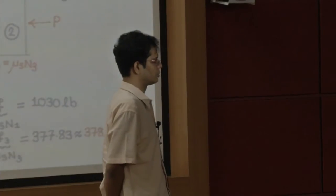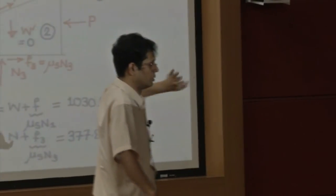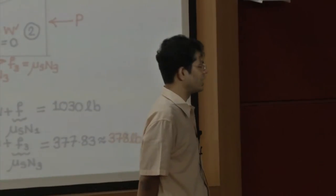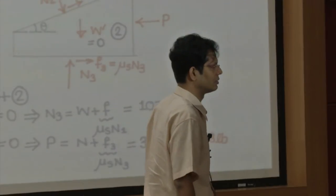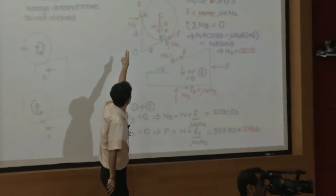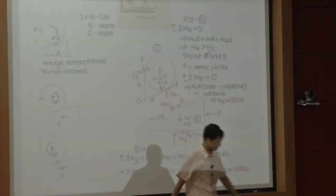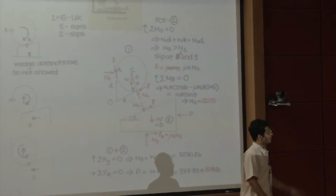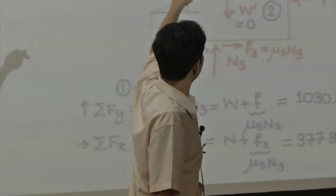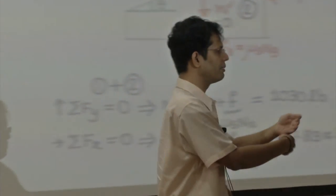A student suggests: instead of taking moment, if you take free body equilibrium in x and y for the first free body diagram, you can calculate N1. But just note — if you take only Fx and Fy without taking a moment, you will have to solve two simultaneous equations. If F equals μ·N1, then there are still three unknowns in the free body. You can solve two simultaneous equations, yes. But by taking torque about point B, we got everything in one shot. The risk with simultaneous equations is you might make a mistake in one or the other.